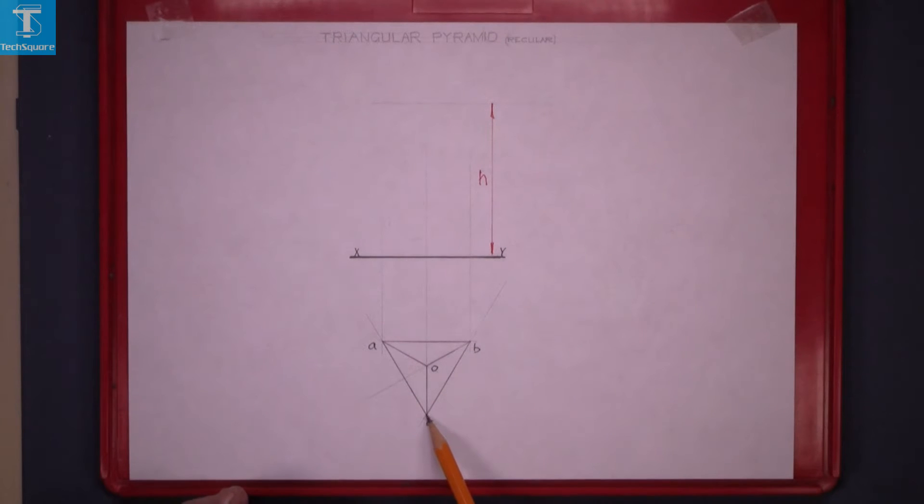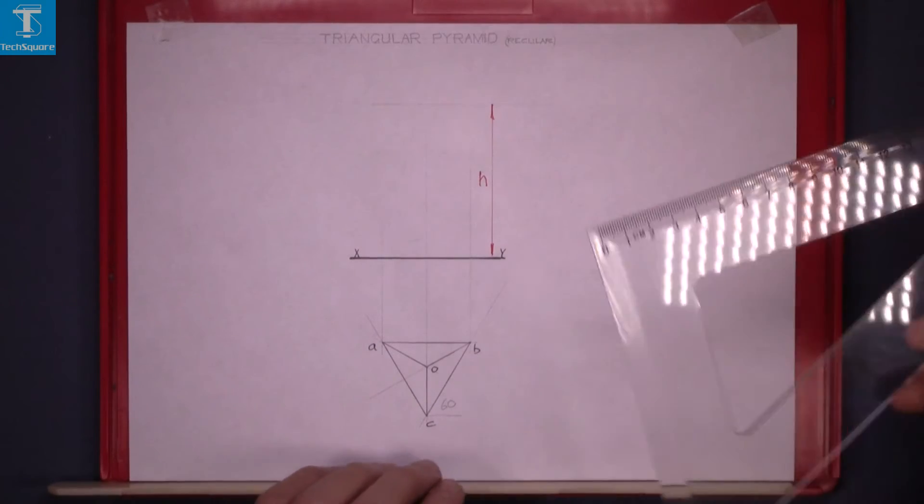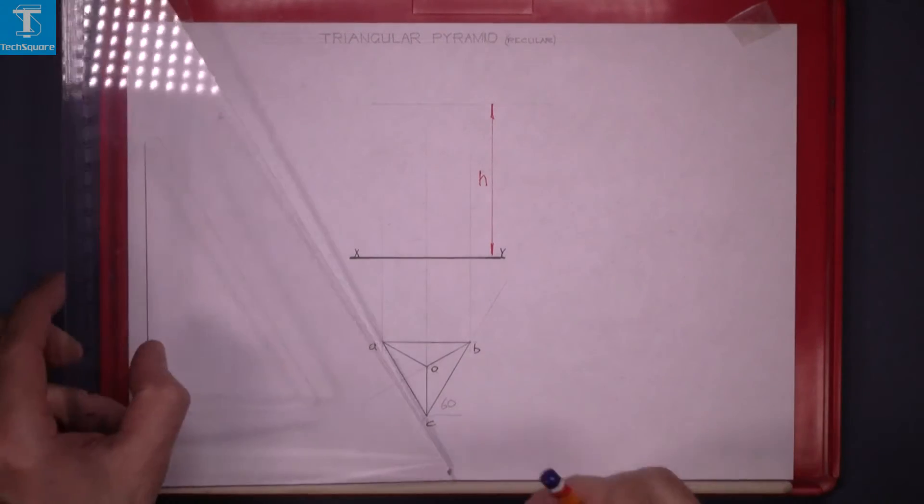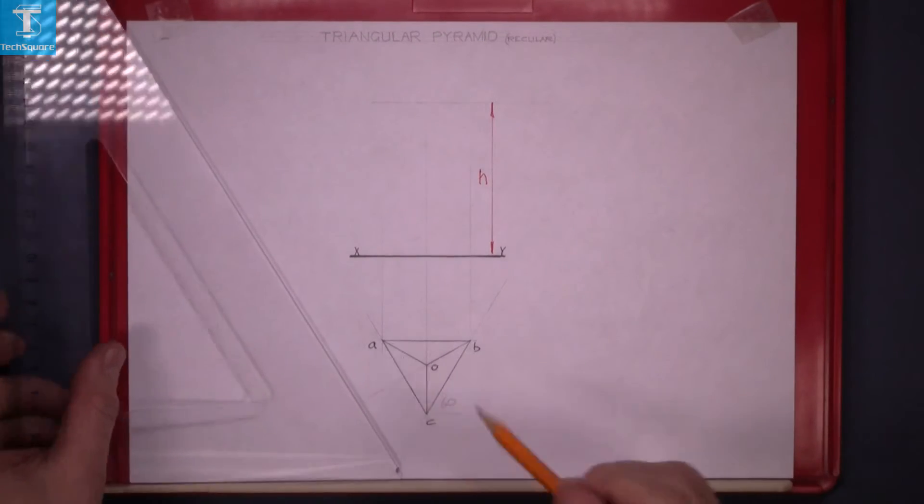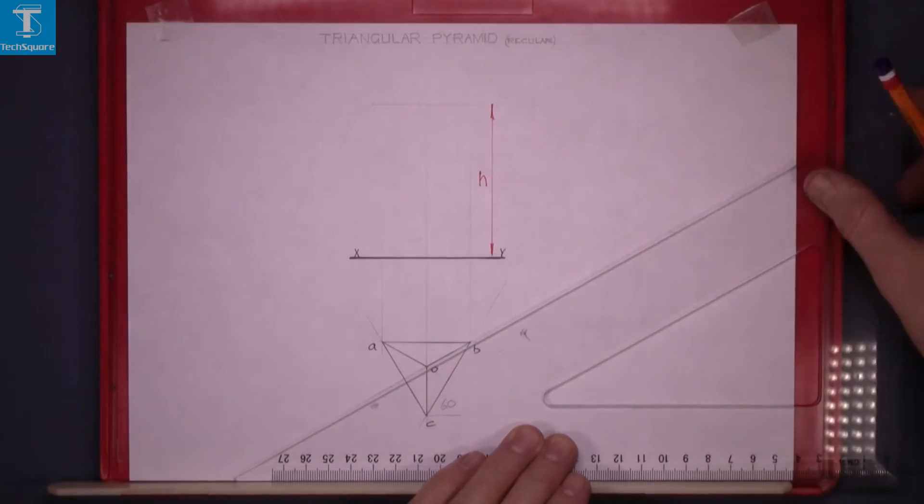The angle that we go up here is 60 degrees. We use the 60 degrees set square. Draw your line up in both directions at 60 degrees. The bisector of the angle then is at 30 degrees.